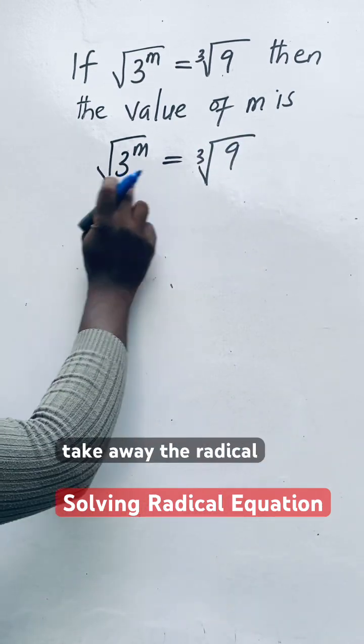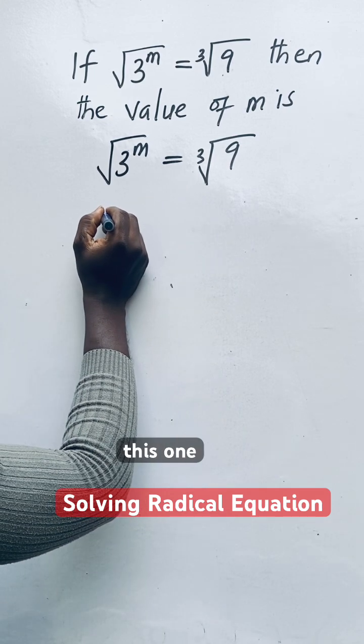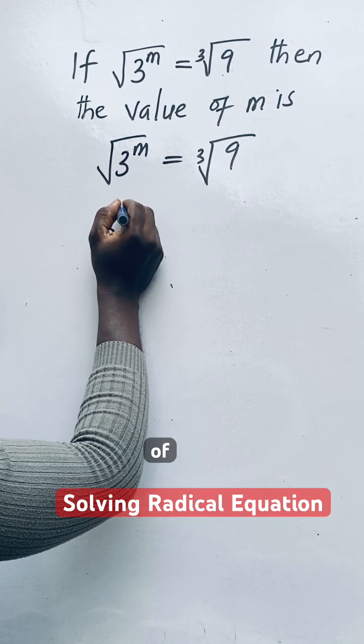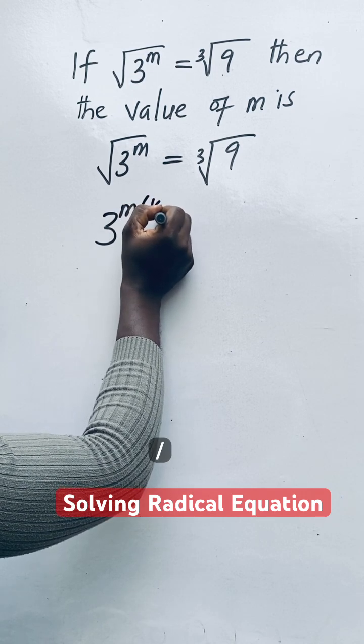So what you do is to take away the radical, the roots. It gives you 3 raised to the power of M to the power of 1 over 2.